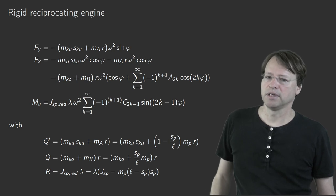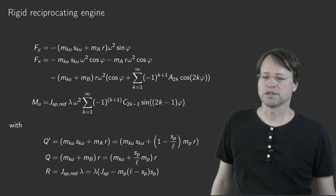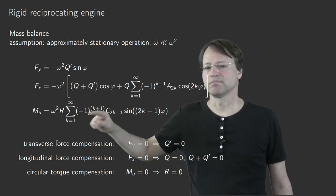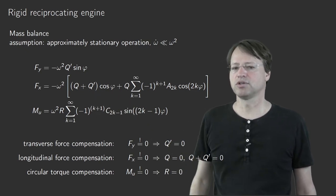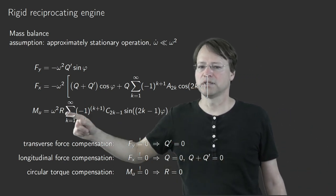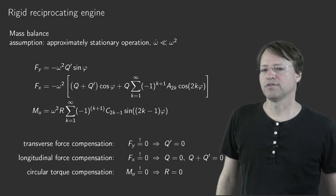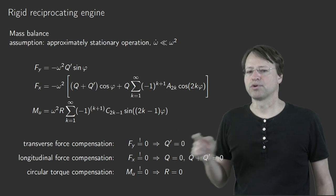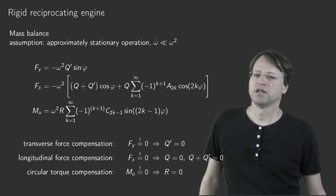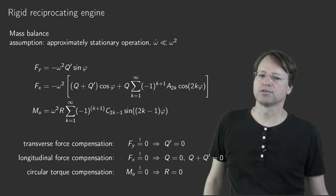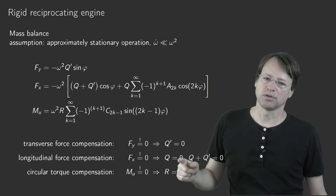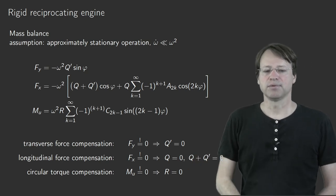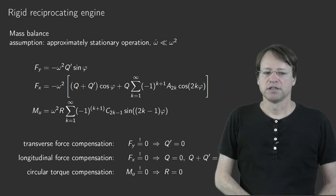The compensation conditions are: for transverse force, q′ = 0; for longitudinal force, q = 0 and q + q′ = 0; and for the circular torque (approximately stationary), R = 0. If q′ = 0, then the second condition simplifies to q = 0. These three conditions on q, q′, and R must be satisfied simultaneously for complete compensation.